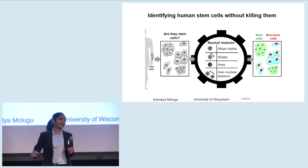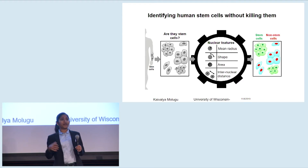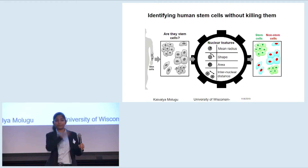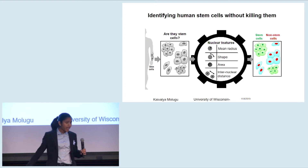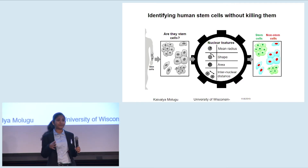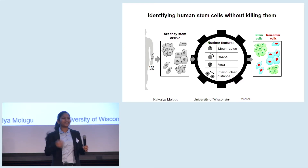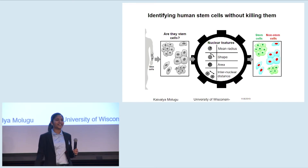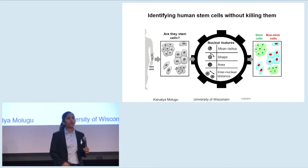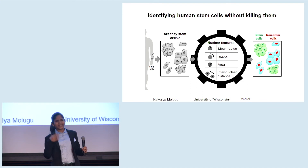If I start off with about 100 skin cells, I get just five stem cells. It becomes important to identify these stem cells out of a pool of different cells so I can use them to cure patient diseases. The problem with current methods is that they're destructive — I need to kill the cell to identify whether it's a stem cell or not. But if I kill it, I can't use it for anything.